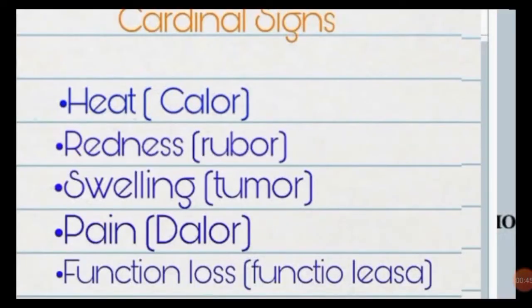Cardinal signs of inflammation — a most important question from an examination point of view, and examiners ask you to name the five cardinal signs of inflammation. The first is calor, which is heat; second is rubor, which is redness; third is tumor, which is swelling; fourth is dolor, which is pain; and the last is functio laesa, which means loss of function.